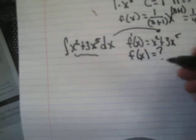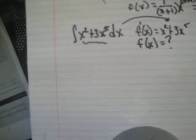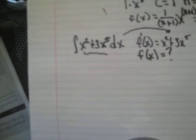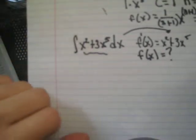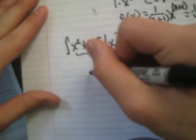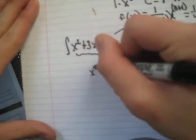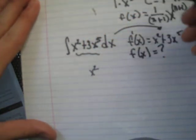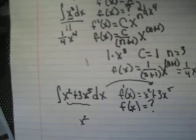And we're trying to find the function that the derivative came from. So, we're just going to take it term by term. So the first term, x squared, we'll use our rule that we came up with right here.